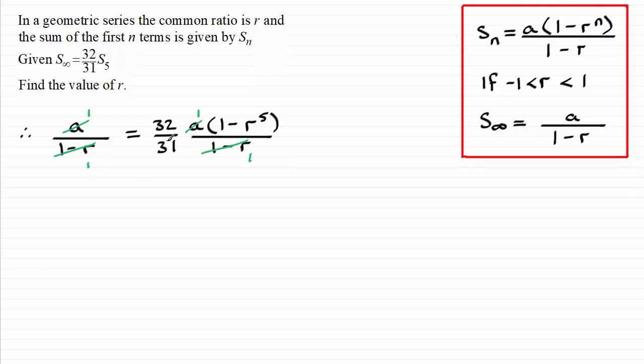I'm just left with this 31 in the denominator now, so I'm going to multiply both sides by 31. So we therefore have 31 equals